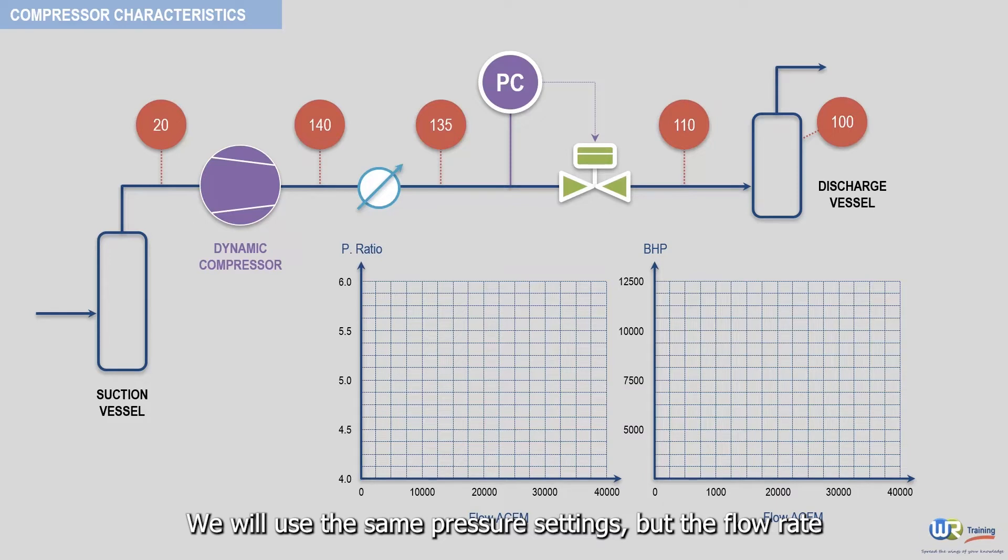We will use the same pressure settings, but the flow rate and horsepower will be larger than that for the positive displacement compressor, since dynamic compressors usually handle inlet flow rates above 5000 actual cubic feet per minute.